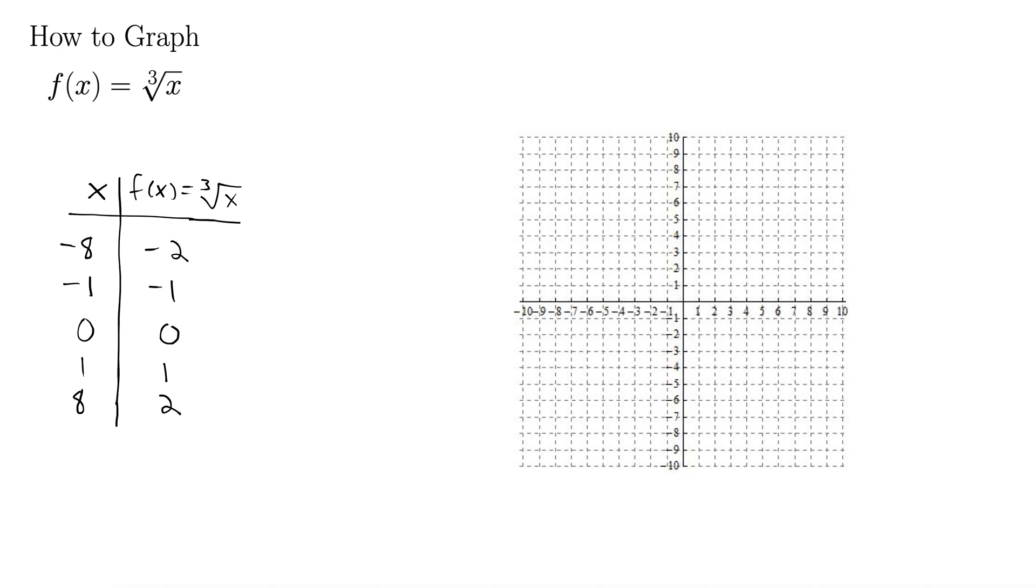There's enough points to at least get an idea of the graph, especially once you kind of see what it looks like. You can really fill this out nicely. Let's see, negative 8 goes to negative 2, so we're down here. Negative 1 goes to negative 1 right there. 0 goes to 0.